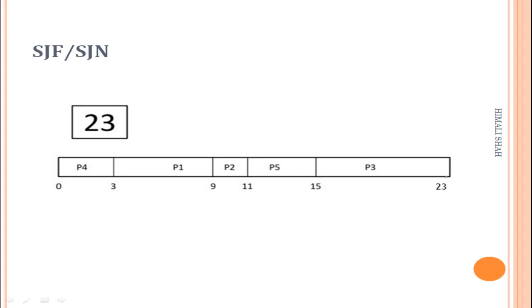To summarize, the finish times are: 3, 9, 11, 15, and 23. So the finish time of P4 is 3, P1 is 9, P2 is 11, P5 is 15, and P3 is 23.